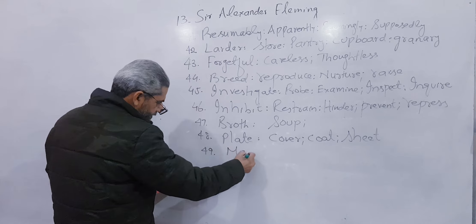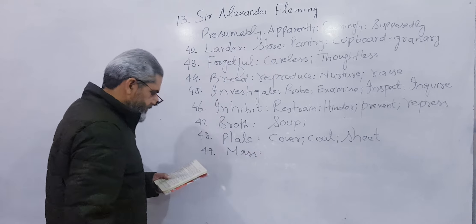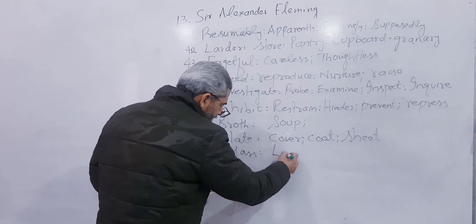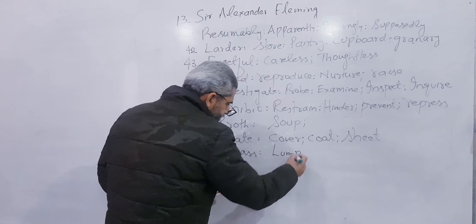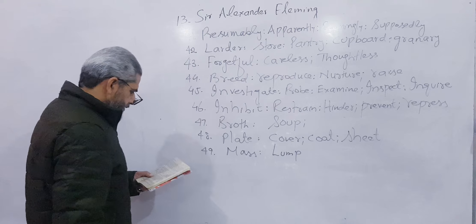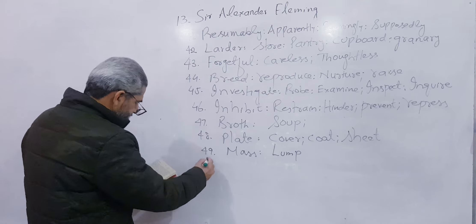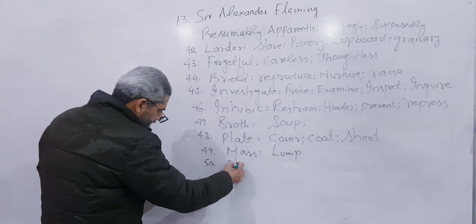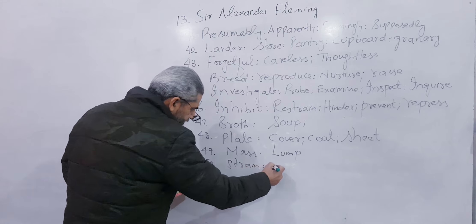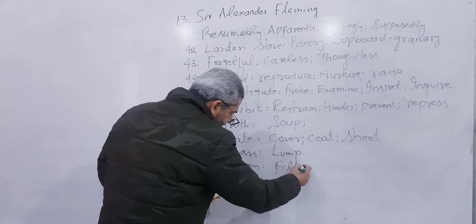Number 49: Mass, M-A-S-S. Mass means a lump, L-U-M-P — a large rounded shape. Number 50: Strain means to filter — filter karna, saaf karna (to clean/purify).